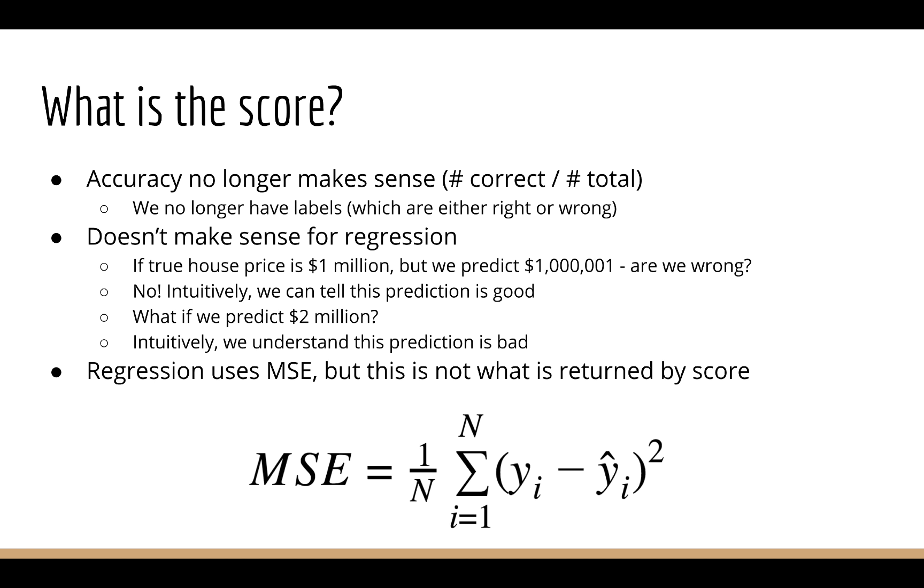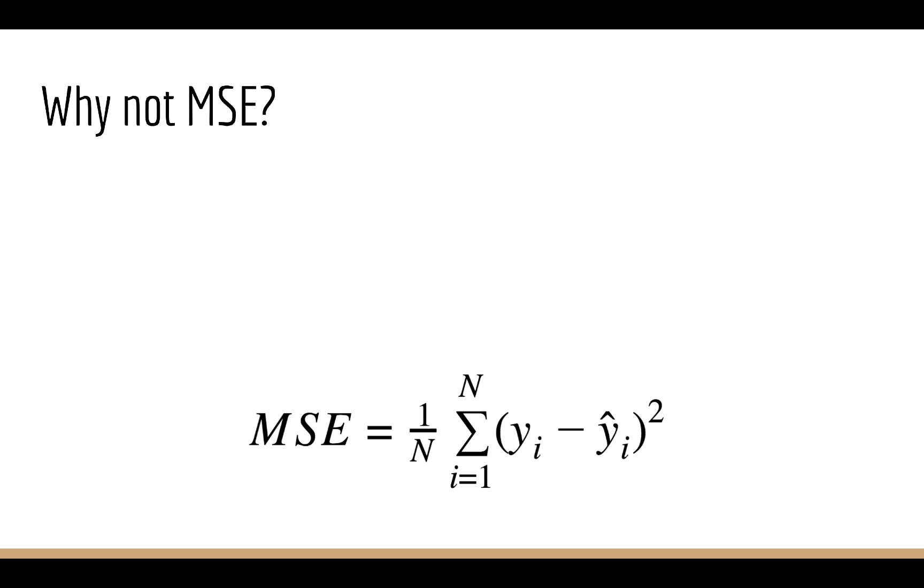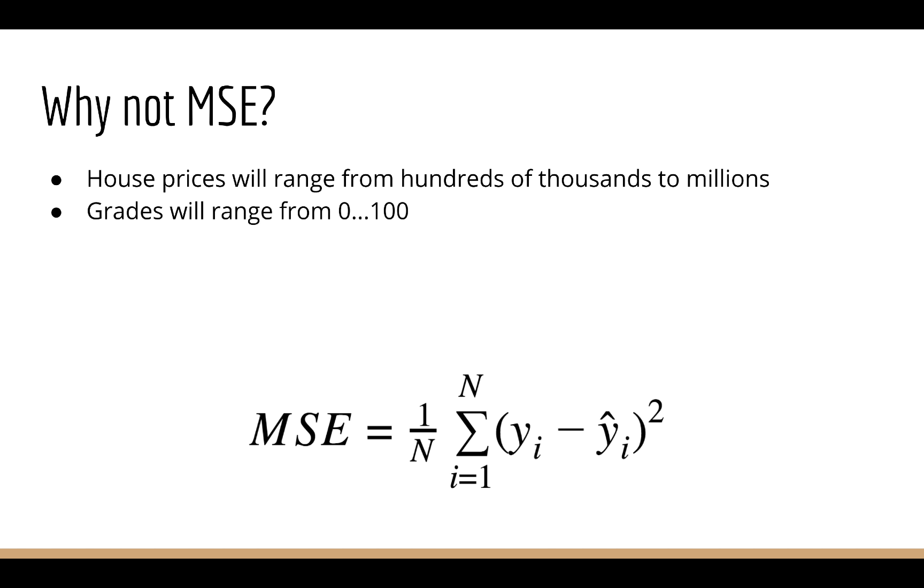Importantly, the mean squared error is not what is returned by the score function. Let's think about why we might not want to use the score function to return the mean squared error. Think about house prices. These are numbers that are going to range from a few hundred thousand to millions. Now think about grades. These are numbers that are going to range from 0 to 100.